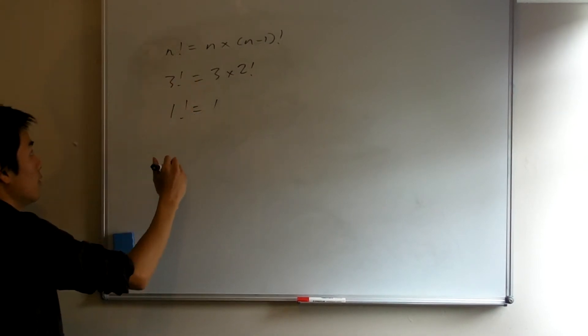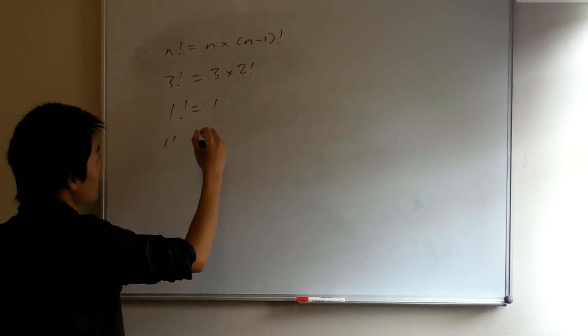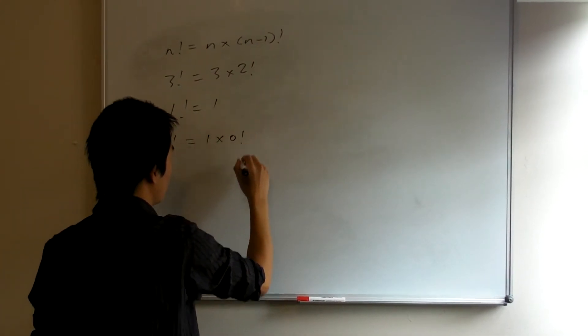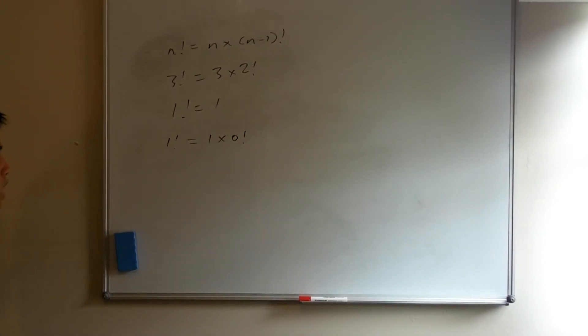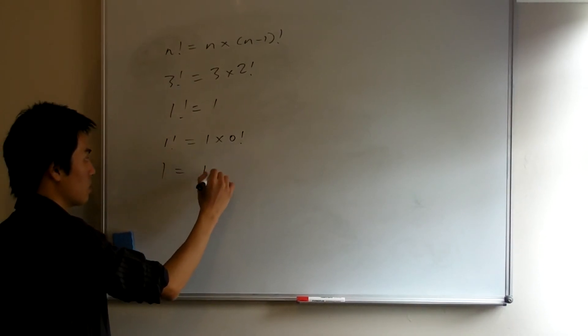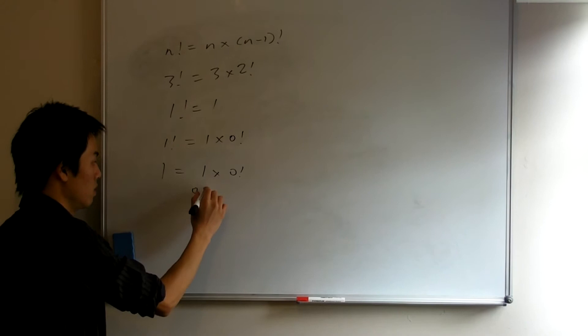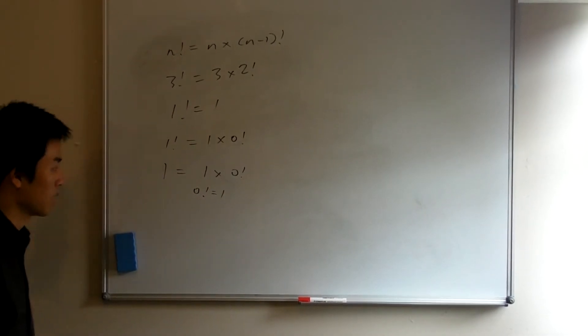Well, if this is true, then whatever 0 factorial may be, it must satisfy this thing. And this is 1 and this is 1. And so this forces 0 factorial to be 1. And that's it.